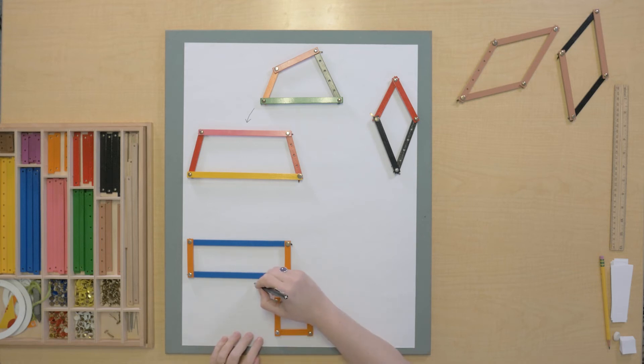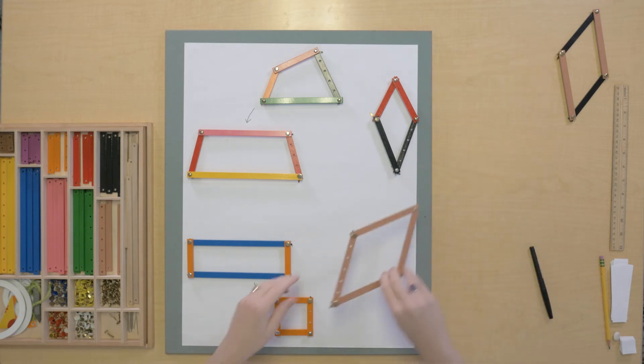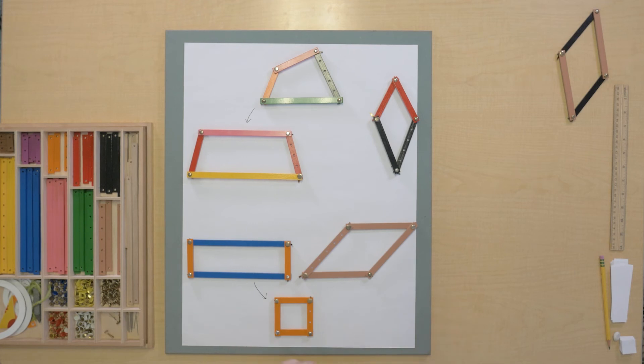Now the thing is that the rhombus also seems closely related to the square to me because it has four sides the same length, just like the square does. So let's put it here and it's also close to the square. Now what we have left is the parallelogram, and I'm going to put that parallelogram here in the middle.